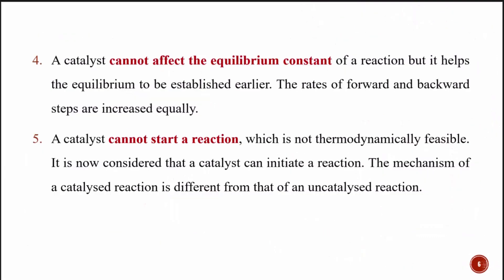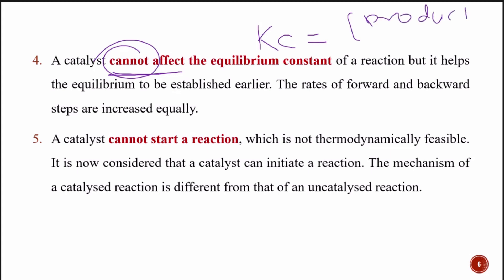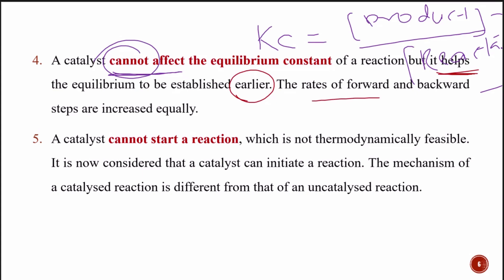A catalyst cannot affect the equilibrium constant. The equilibrium constant is the concentration of product over concentration of reactant. A catalyst cannot affect the equilibrium constant of a reaction, but it helps the equilibrium to be established earlier. It helps to quickly achieve equilibrium because the rates of both the forward and backward steps are increased equally.